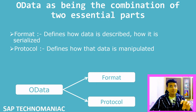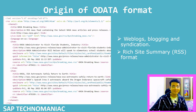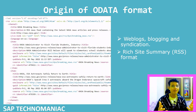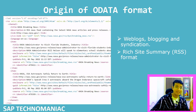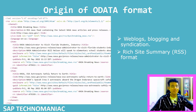We will first discuss where the OData format comes from. The origin of the OData format comes from weblogs, blogging, and syndication. One of the very popular weblog formats is Rich Site Summary (RSS). NASA also uses this particular format to create their RSS feed. Let's see how this Rich Site Summary format looks.